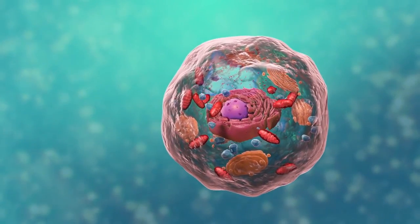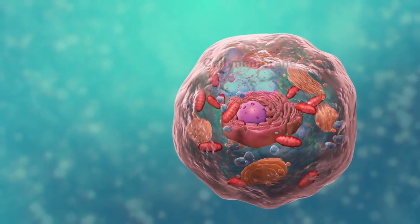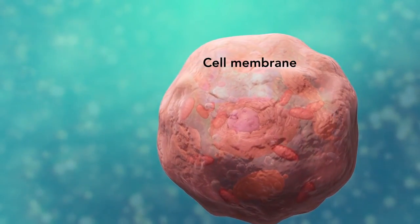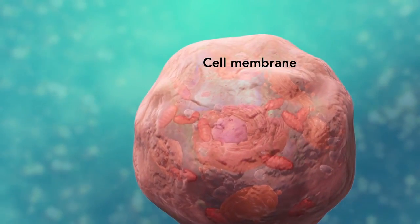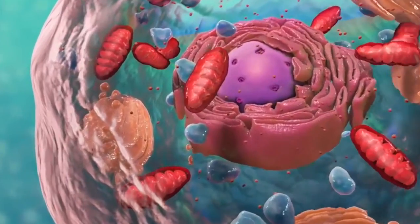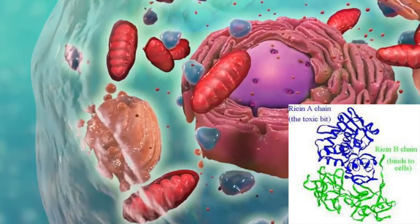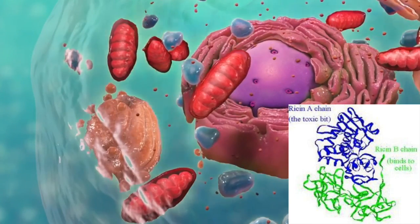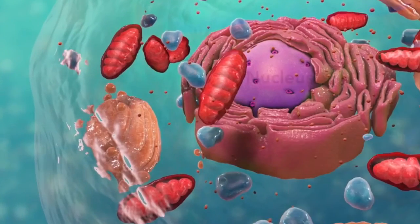When attacking a cell, the B chain binds to the cell membrane, damaging the cell from the outside. While the B chain is doing that, the A chain produces poisonous enzymes. The binding of the B chain to the outside of the cell triggers the cell to absorb the toxin.